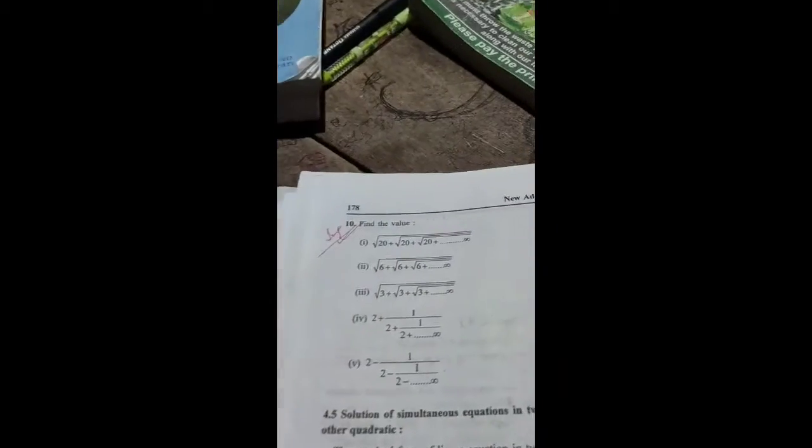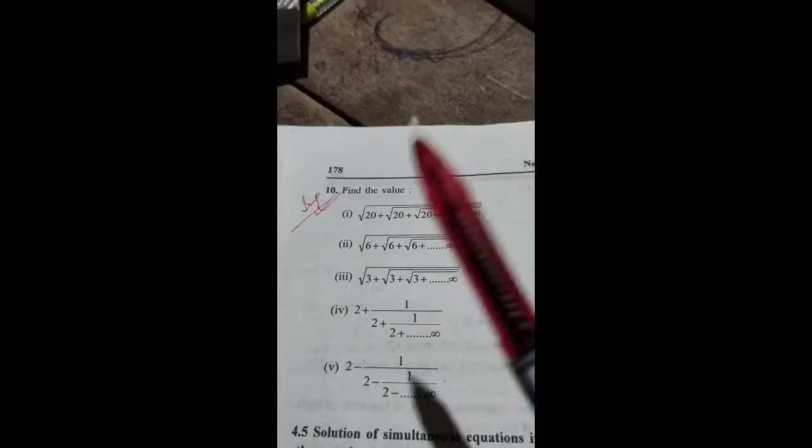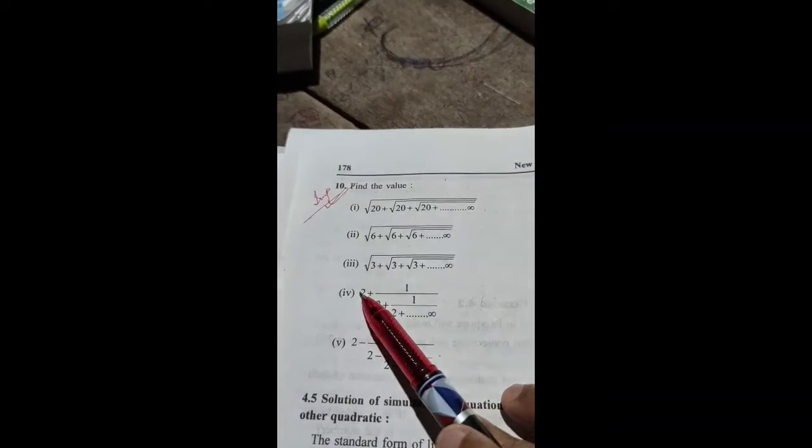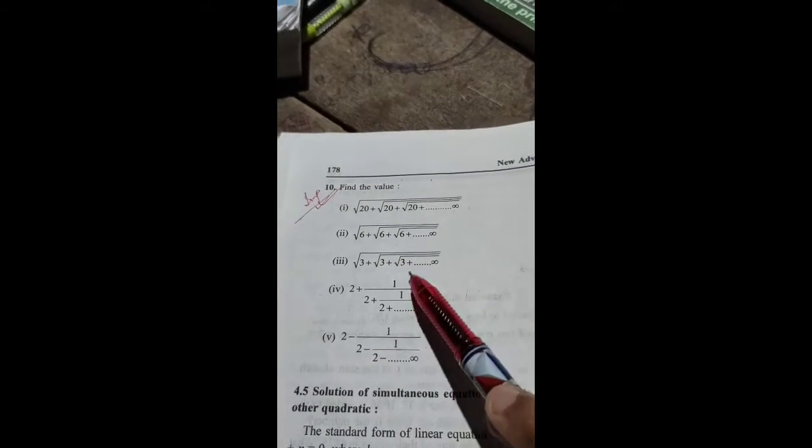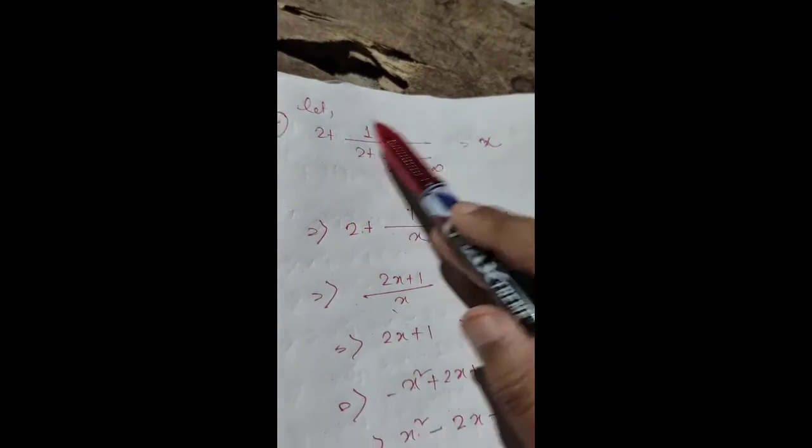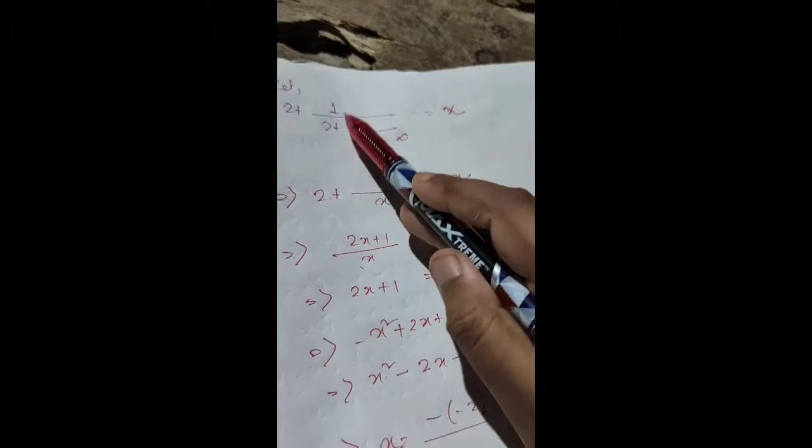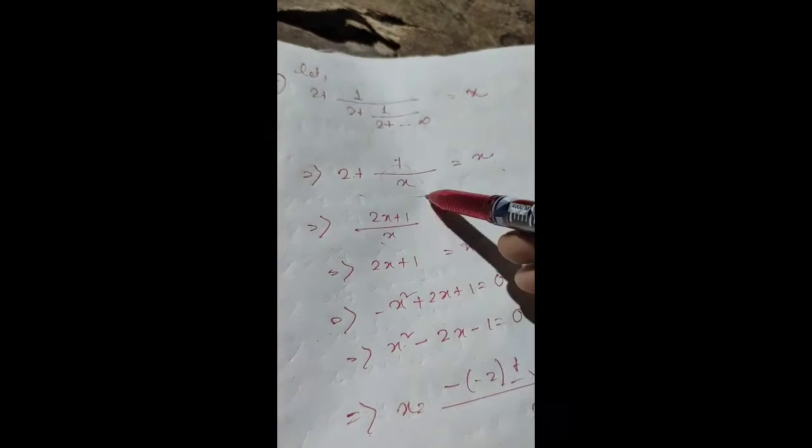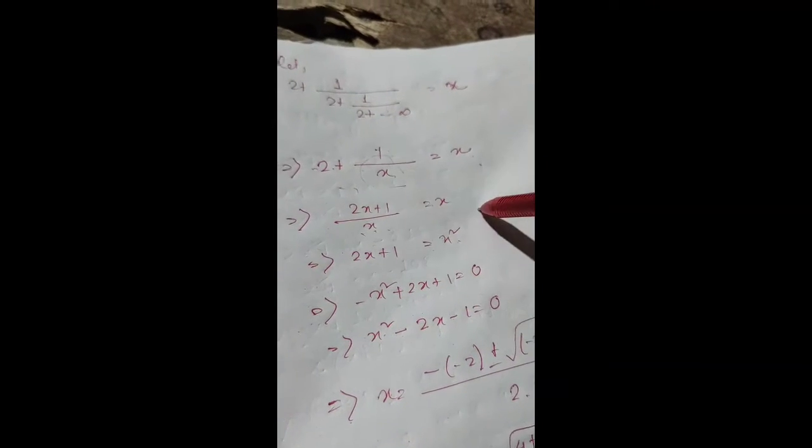Question 2 and 3 are similar, same type, same process, so try to solve it by yourself. Next is question 4: 2 plus 1 over 2 plus 1 over 2 plus up to infinity. Using the same process, let x equal the repeating part. So x = 2 + 1/x.